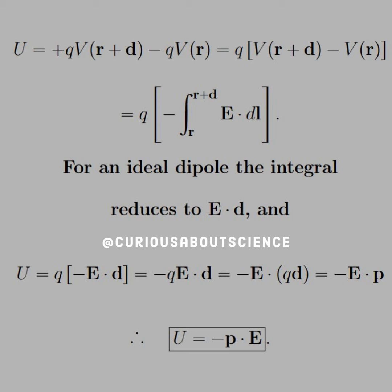Once we factor out a Q from that, we see that we have a potential difference between V at R plus D and V at R. This potential difference had a definition with the electric field. And that's what we see in the next line.